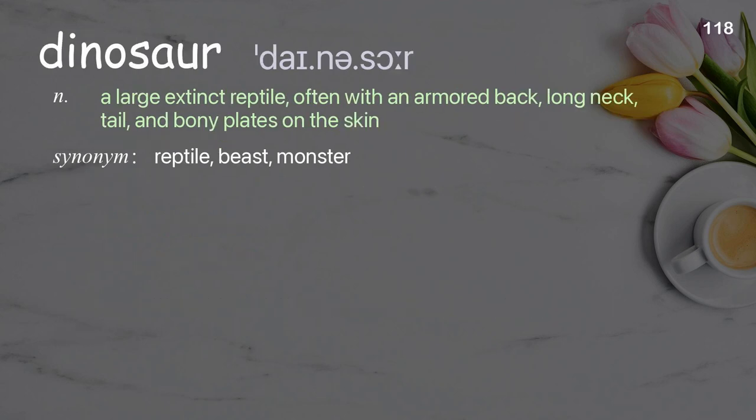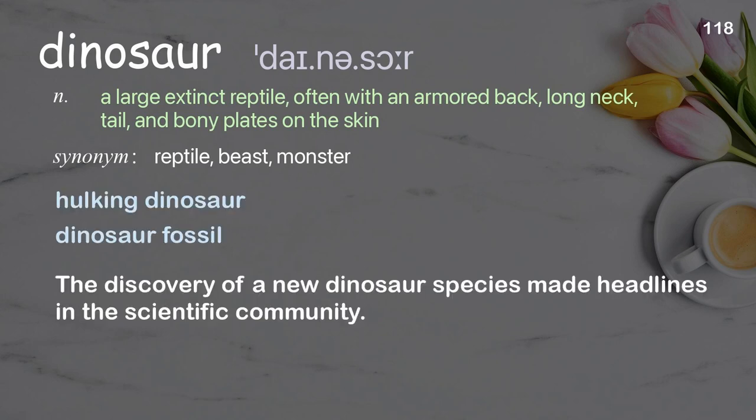Dinosaur: a large extinct reptile, often with an armored back, long neck, tail, and bony plates on the skin. Examples: hulking dinosaur, dinosaur fossil. The discovery of a new dinosaur species made headlines in the scientific community.